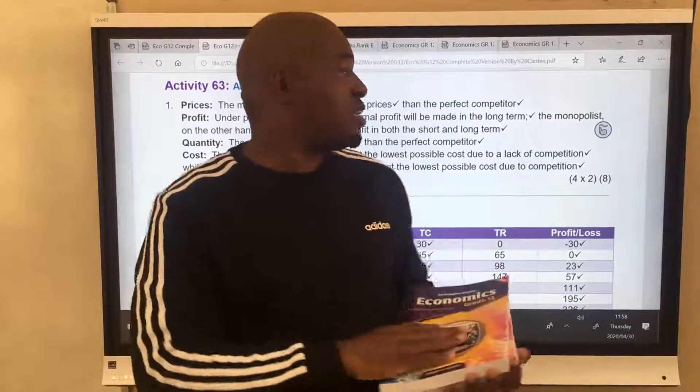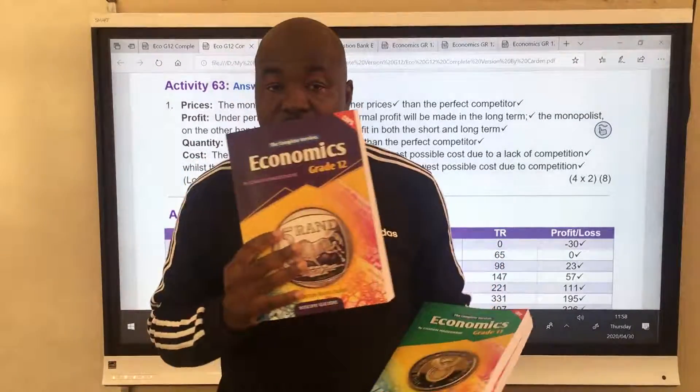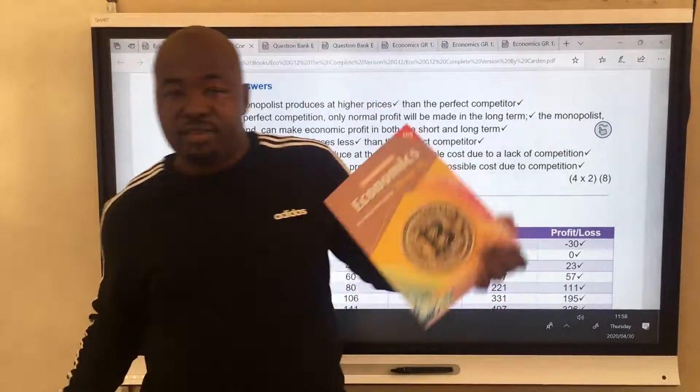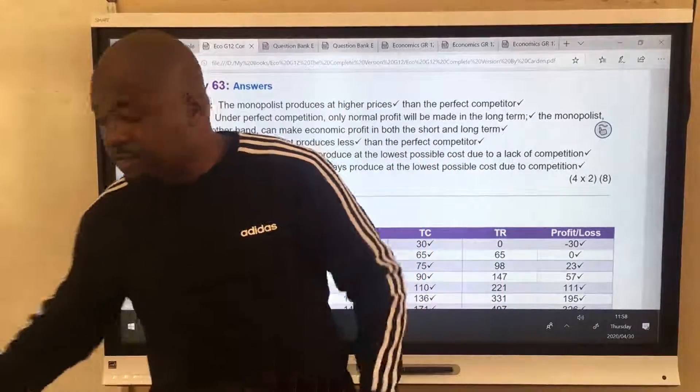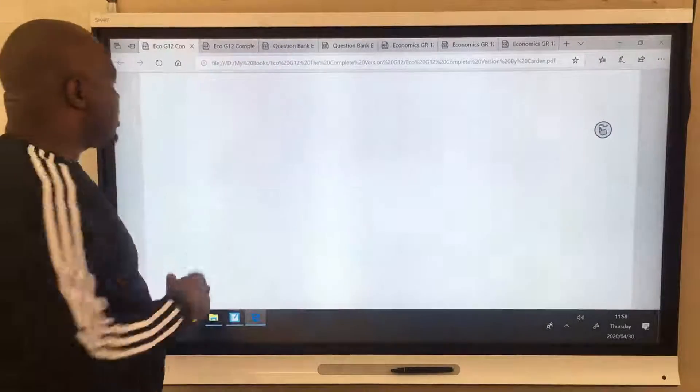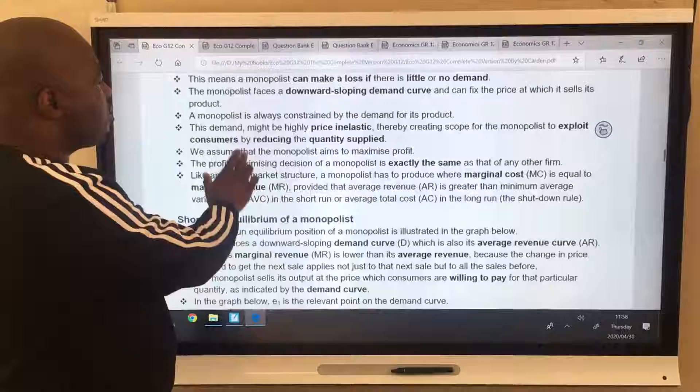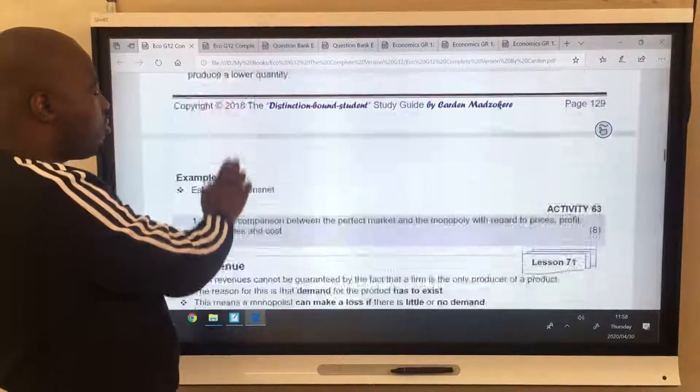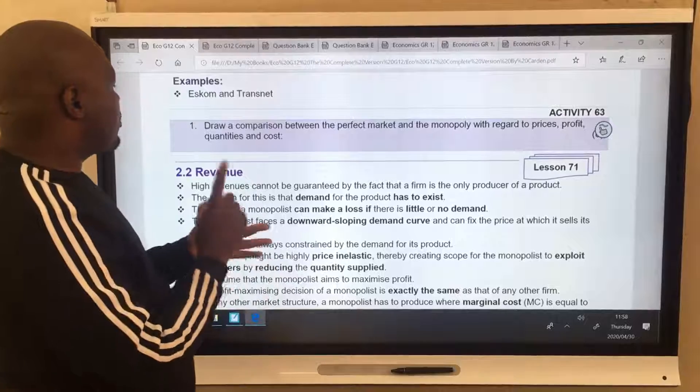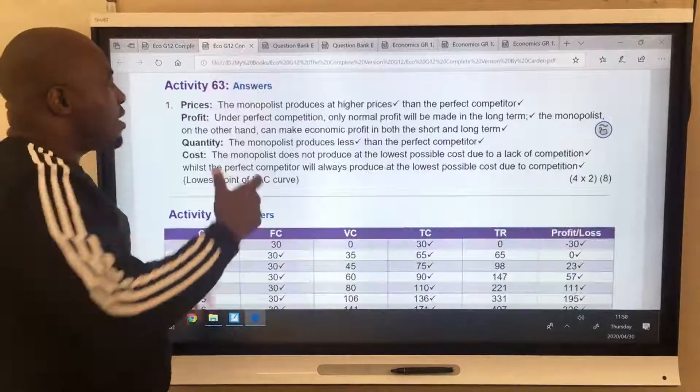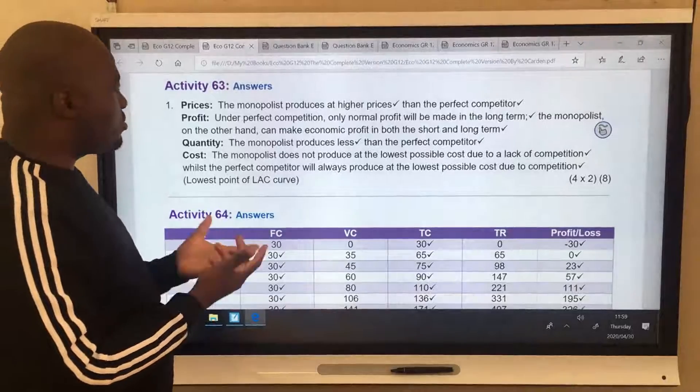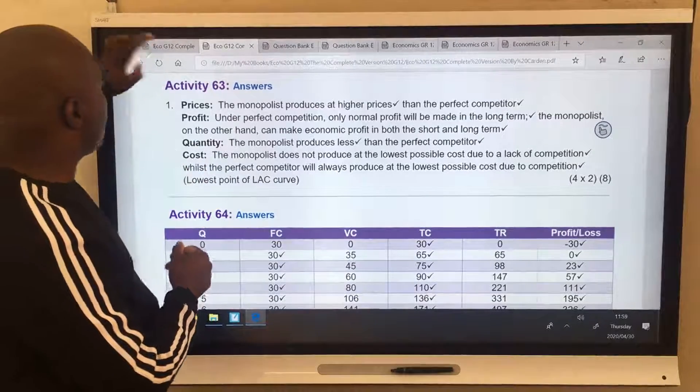Good day, grade 12. Welcome to lesson number 71 from the Distinction Bound Students textbook. So we have grade 12, grade 11 and grade 10. Now in this lesson, I'll start by revising homework with you. And it was give a comparison between perfect and monopoly and use price, profit, quantity and cost. It's quite an easy activity. You can go through this important video and mark yourself.